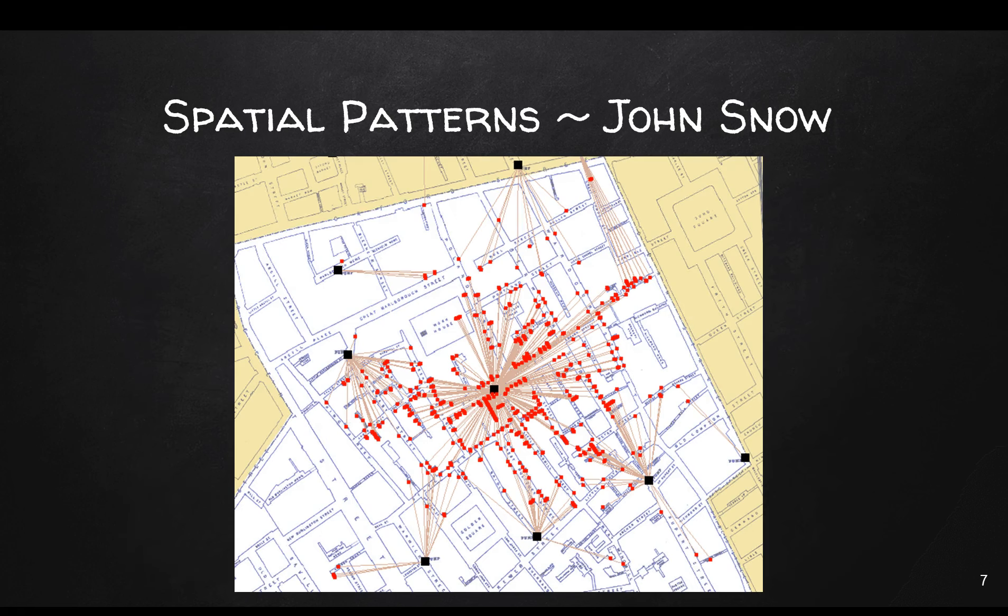If John Snow were alive today, he could use GIS to perform this kind of analysis, where the black squares represent the water pumps and the red dots represent cholera deaths. By using GIS, we can draw a line from each cholera death to the closest pump location, and you can quickly see that the closest pump to the most cholera deaths is the Broad Street pump — the deaths are much more clustered there. We can quickly identify the spatial pattern showing that most of these deaths were likely resulting from contaminated water from the Broad Street pump. This gives us a little overview of what GIS is and how it could be used. Have a great day!